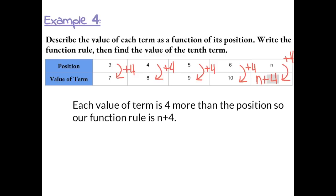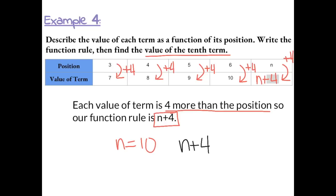We can describe this as each value of the term is 4 more than the position, so the function rule is n + 4. To find the value of the 10th term, we make n equal to 10 and use the function rule: 10 plus 4 gives us 14. So the value of the 10th term is 14.